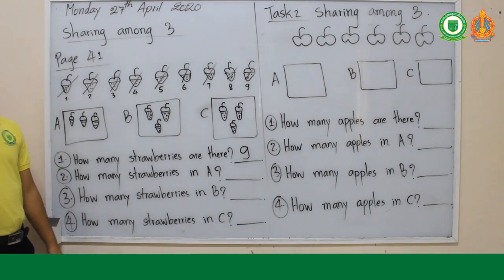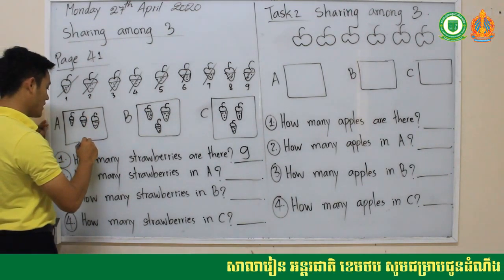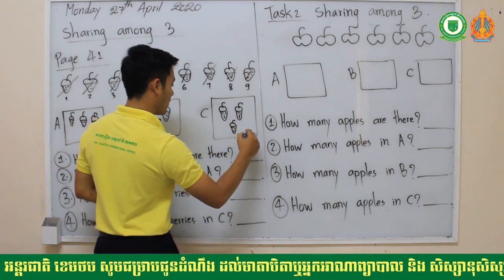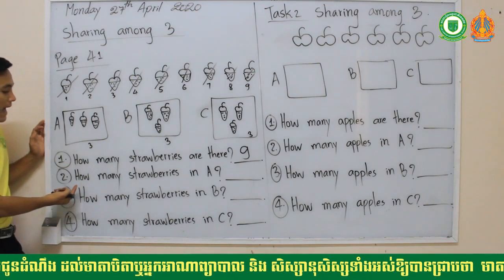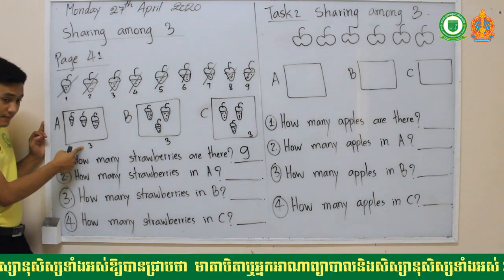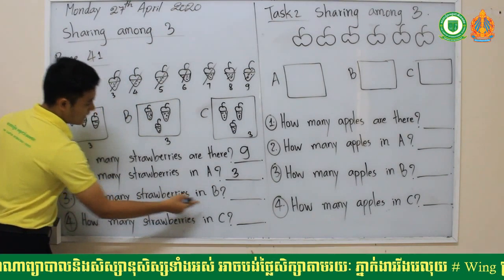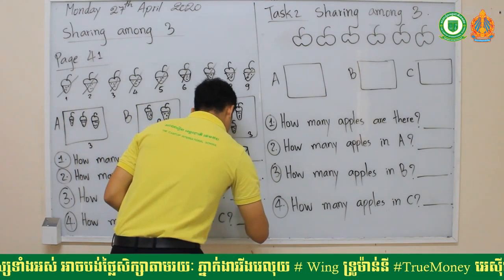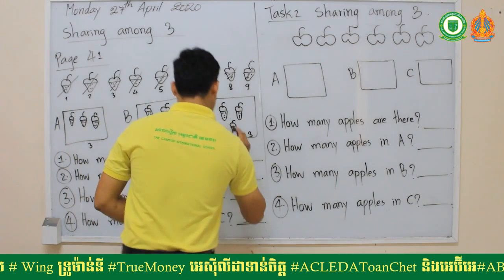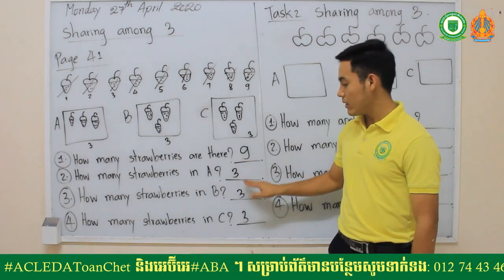Now we can answer the remaining questions. Count box A: one, two, three — three strawberries. Count box B: one, two, three — three strawberries. Count box C: one, two, three — three. So each box has three strawberries, and three plus three plus three equals nine. The answer is correct.